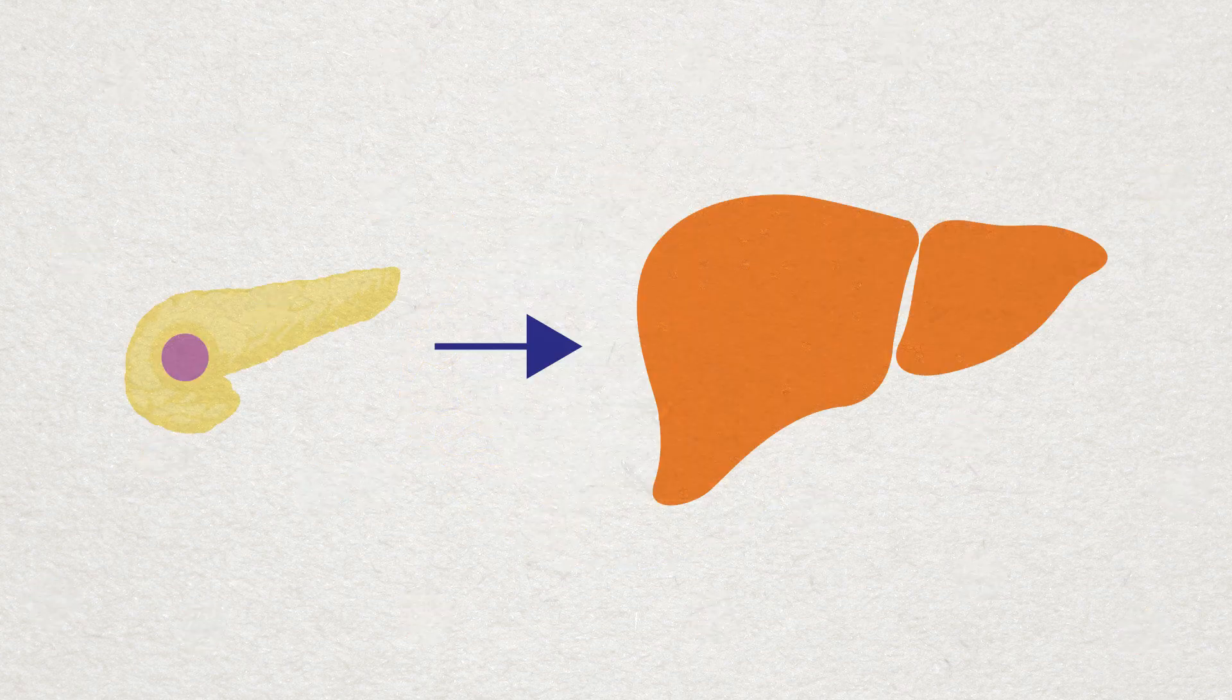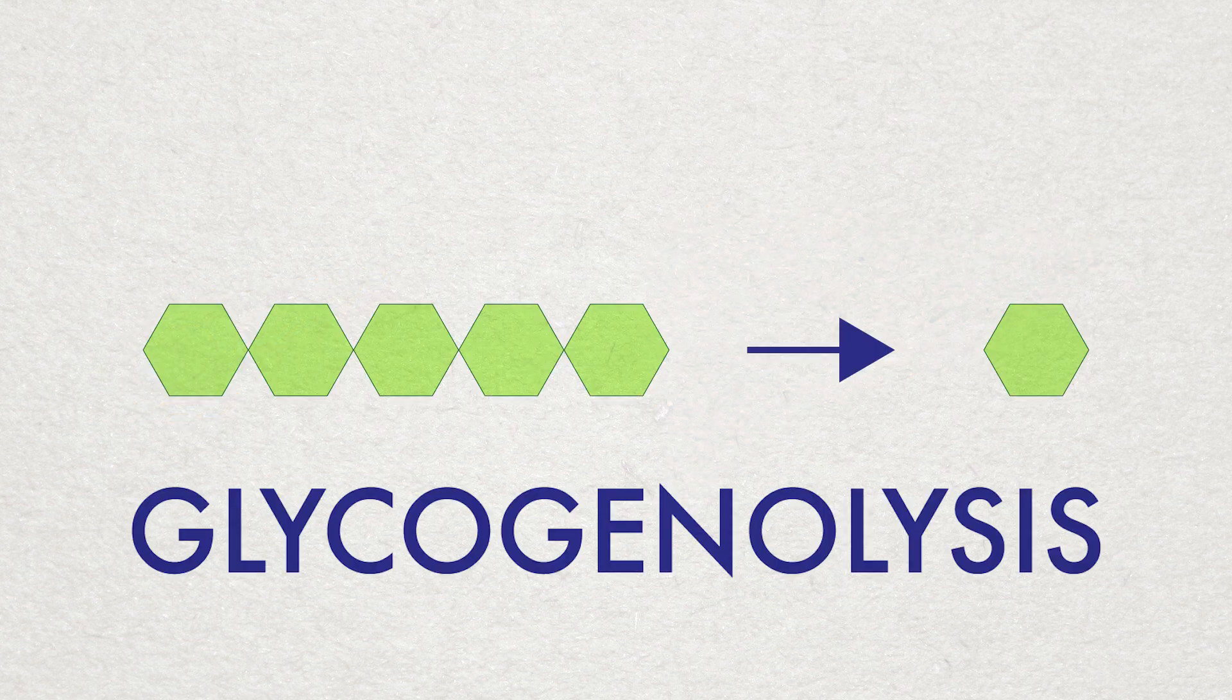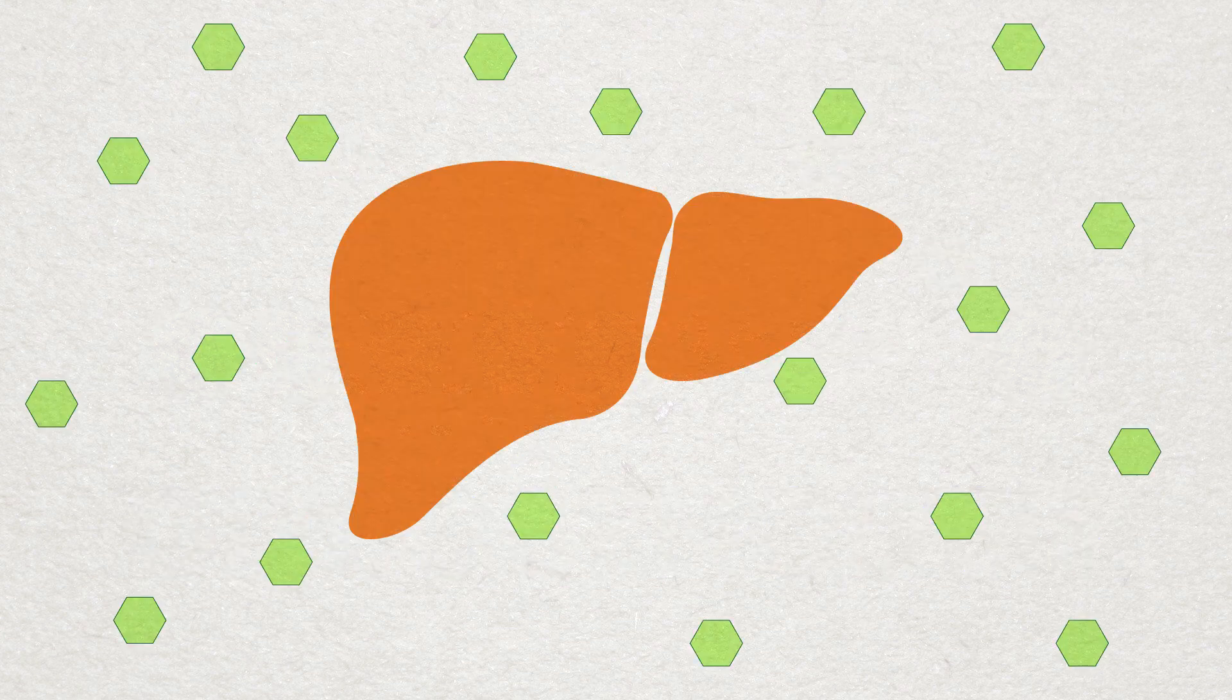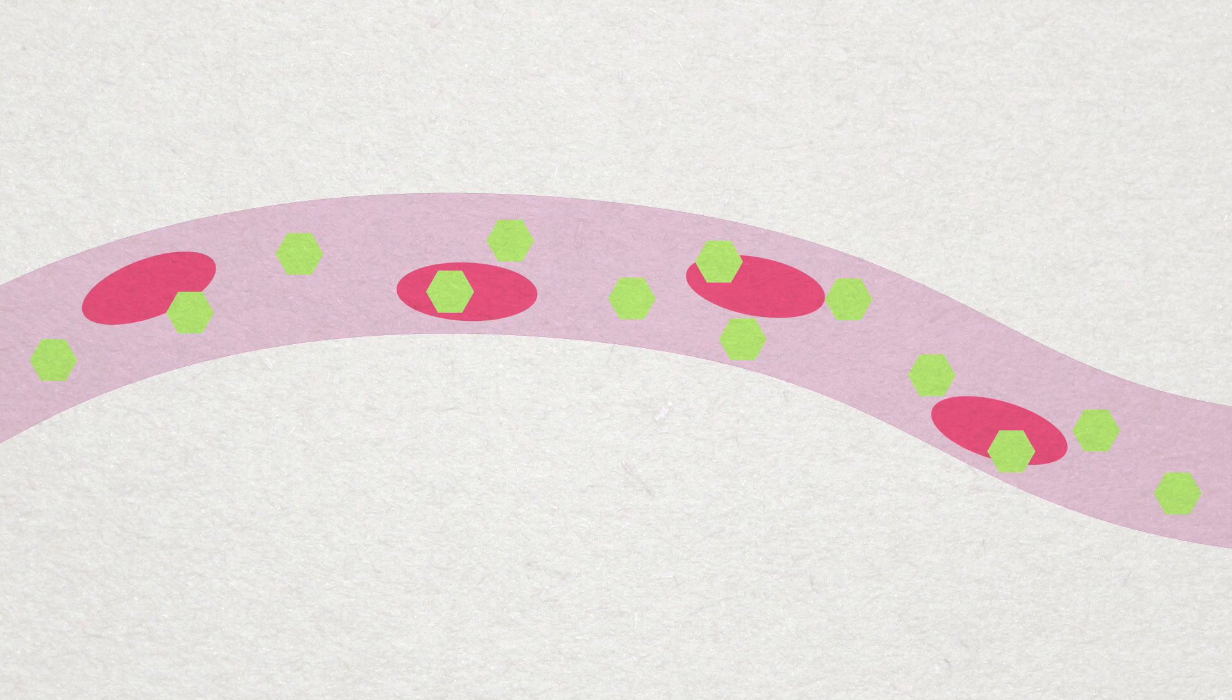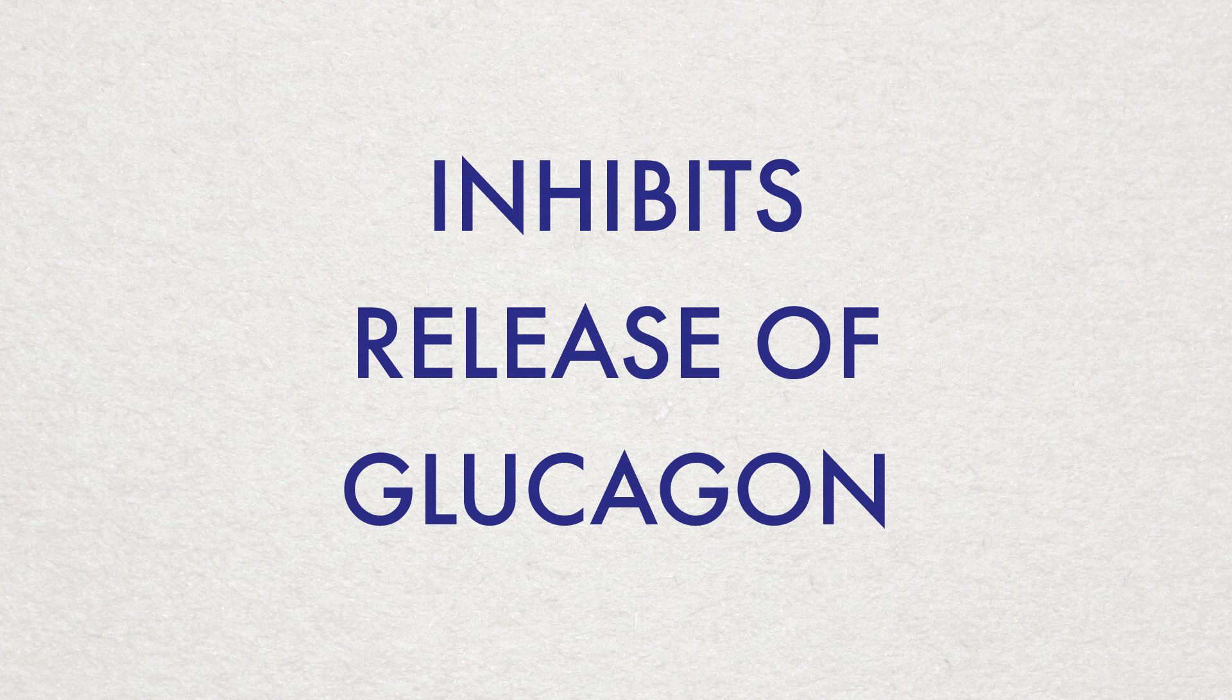Glucagon travels to the liver in the bloodstream and targets the liver to convert glycogen back into glucose. As more glucose moves from the hepatocytes into the blood, the blood glucose levels rise, and hyperglycemia inhibits the secretion of glucagon.